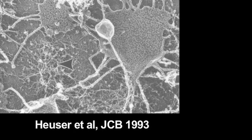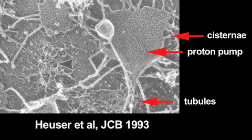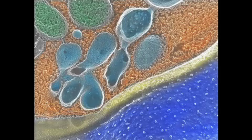This electron micrograph captures the complex network of cisternae and tubules that make up the contractile vacuole system. The membrane contains a powerful proton pump, which pumps protons into the lumen of the contractile vacuole, generating an osmotic gradient that draws water out of the cytosol and into the lumen.